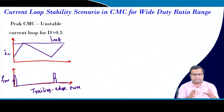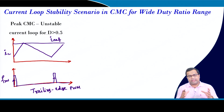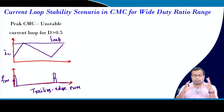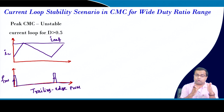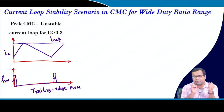It can be shown - and we will consider this in lecture 23 - that this current loop will be unstable when duty ratio D is greater than 0.5. In fact, with the outer closed loop the system can be unstable even for duty ratio smaller than 0.5, perhaps around 0.45. So peak current mode control is stable when duty ratio is less than 0.5.